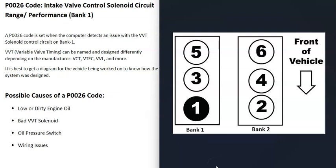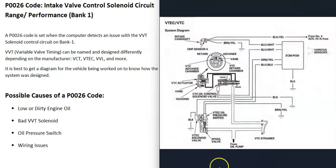If you have a V6 or V8 engine, there are going to be two banks. Bank one is always the side of the engine with the number one cylinder. Google your engine's cylinder location or firing order to locate the number one cylinder — that side is bank one, and the opposite is bank two. On a four-cylinder engine there will only be one bank.